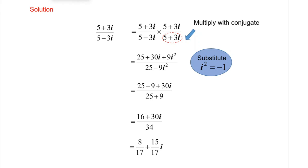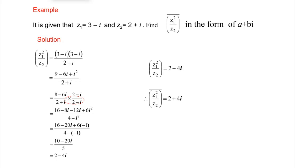Simplify (5 + 3i) / (5 − 3i) in the form a + bi. First, the conjugate of 5 − 3i is 5 + 3i. Multiply both numerator and denominator by the conjugate. After that, expand and substitute i² with −1, then simplify the answer in the form a + bi. For the following example, express z1² / z2 in the form a + bi first, then find the conjugate from it.